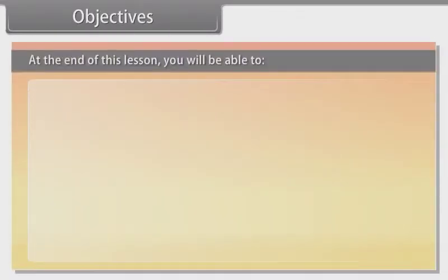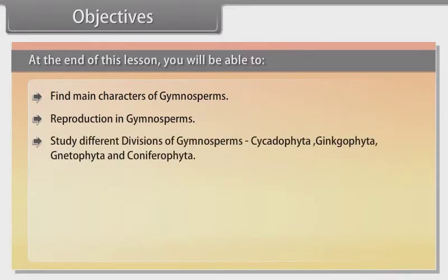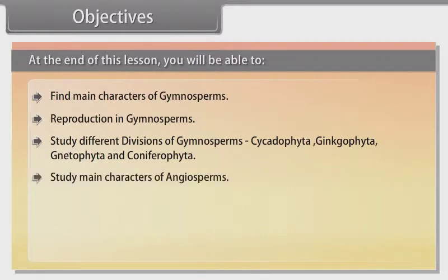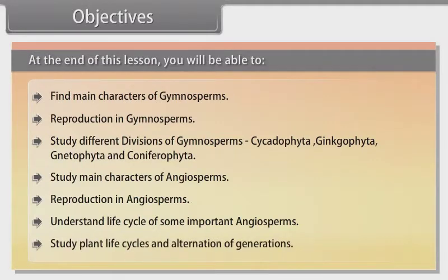Objectives. At the end of this lesson you will be able to find main characters of Gymnosperms, reproduction in Gymnosperms, study different divisions of Gymnosperms: Cycadophyta, Ginkgophyta, Gnetophyta and Coniferophyta. Study main characters of Angiosperms, reproduction in Angiosperms, understand life cycle of some important Angiosperms, and study plant life cycles and alternation of generations.